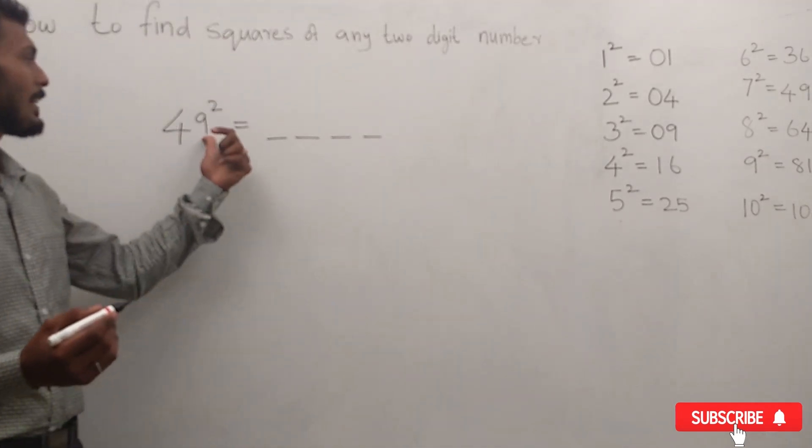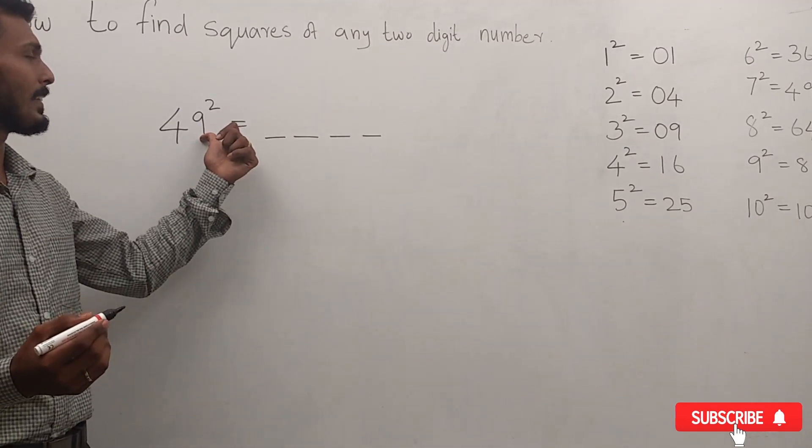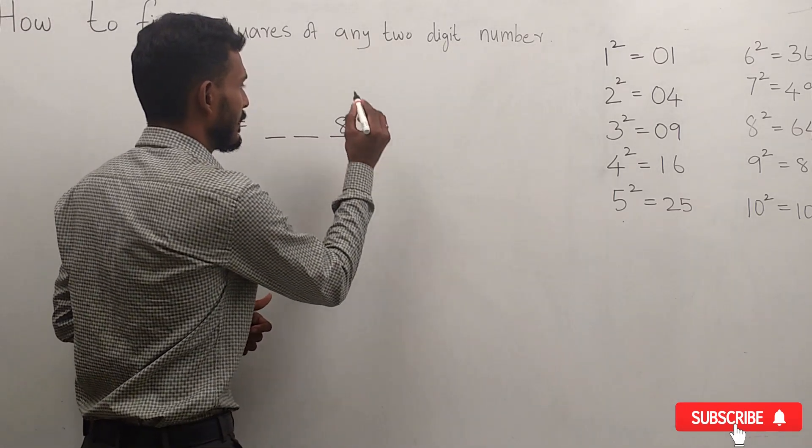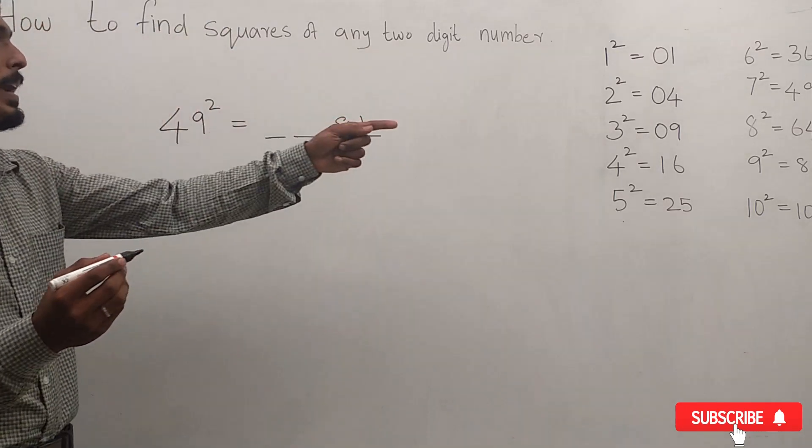First of all, write down the square value of 9. The value of 9² is 81, then 4, the square value is 16.